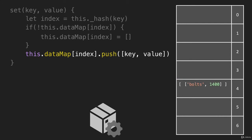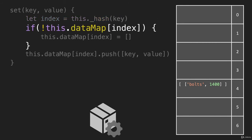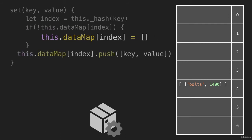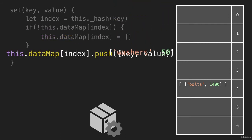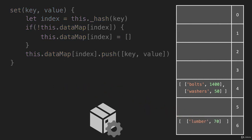Now let's look at adding another key-value pair to the same address. We'll run the set method and pass it a key and value — in this case, 'washers'. First, we run the hash to see what address it maps to, and the index for 'washers' also returns 4. So index is set to 4. Then we move to the if statement — is there already something at address 4? There is, which means we skip creating the empty array, and we move straight to pushing this key-value pair into the existing array.